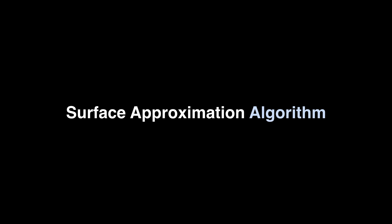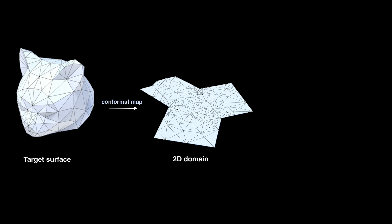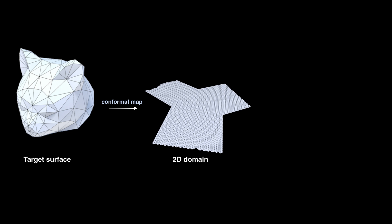And our algorithm is the following. First we take a target surface, and we find a conformal parametrization for it. Then we overlay a mesh of equilateral triangles on top of that 2D domain, and we get a flat layout for our auxetic material.